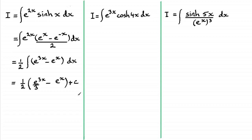Now I could leave it like that, but I'm going to pull out a third out the front here with the half, that's going to give us one sixth, make an adjustment in the bracket, and we end up with one sixth e to the three x minus three e to the power x plus c.